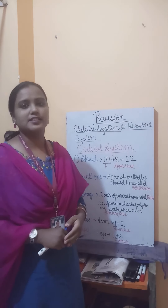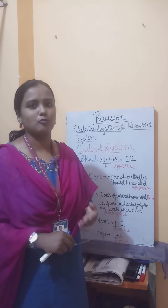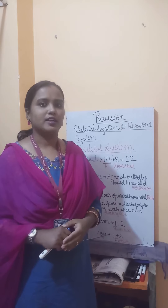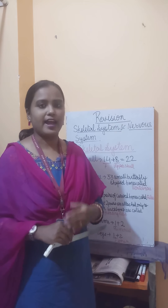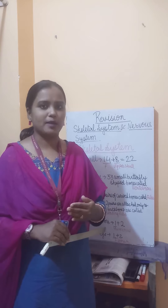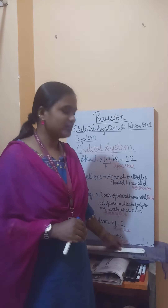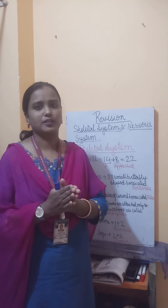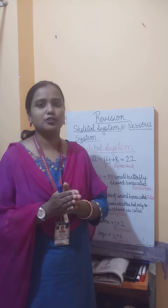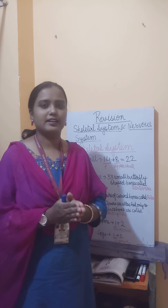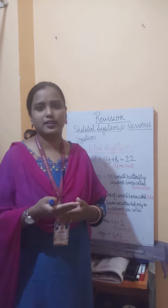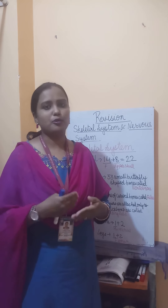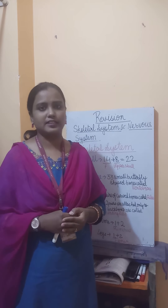The skeletal system is the framework of bones throughout our body. When a baby is born it has 300 bones. But as the baby grows up, some of the smaller bones fuse together to form one single bone. At last, when the baby turns into an adult, the adult has 206 bones. We have 4 different parts of the skeletal system.